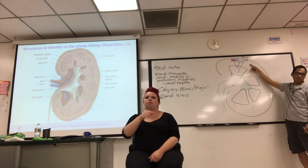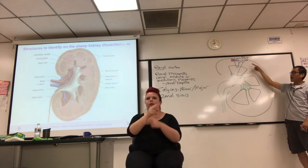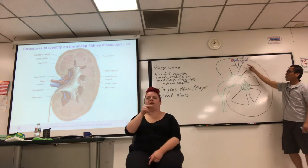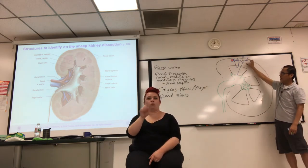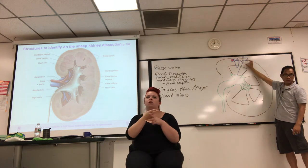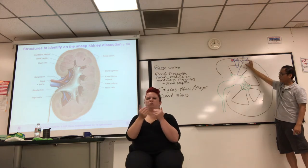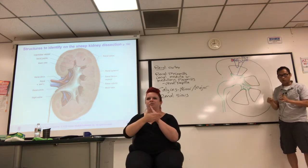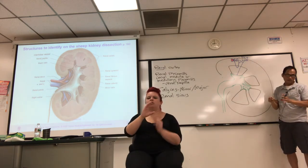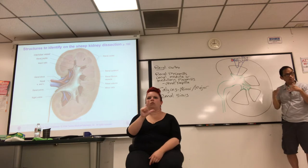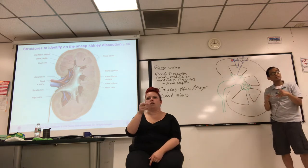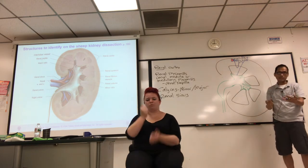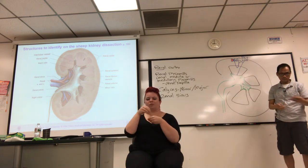This is one kind of nephron — the kind where it's at the outer edge, called a cortical nephron, because most of the parts are in the cortex, not the medulla.